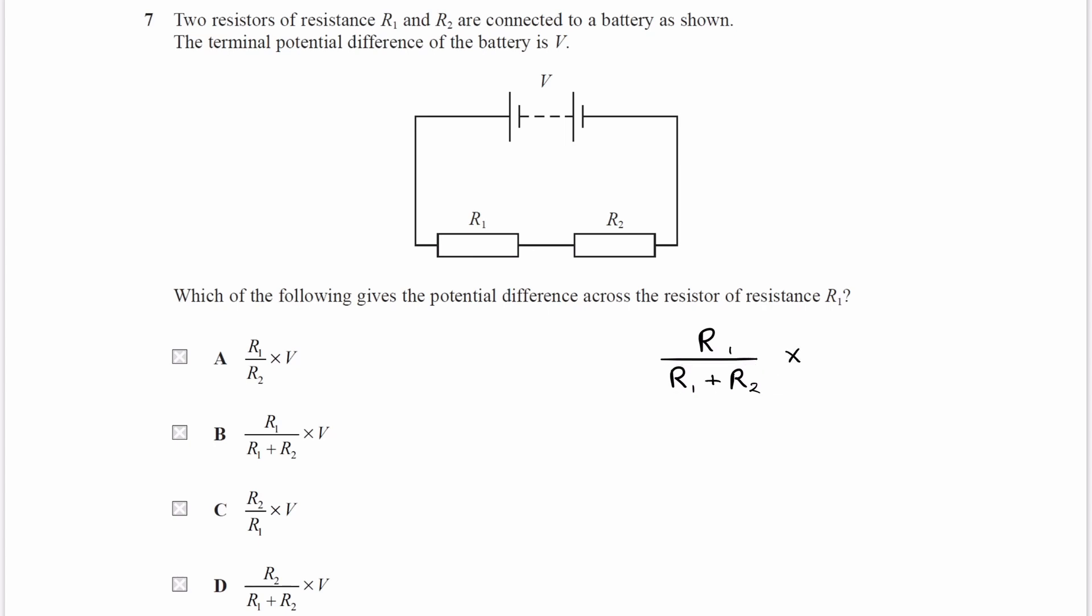And if we multiply this by the voltage or the terminal voltage, so the total voltage available to these two components, then we work out the voltage that R1 gets. And that would be B.